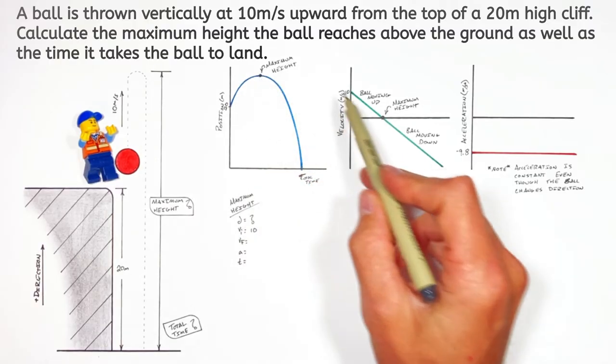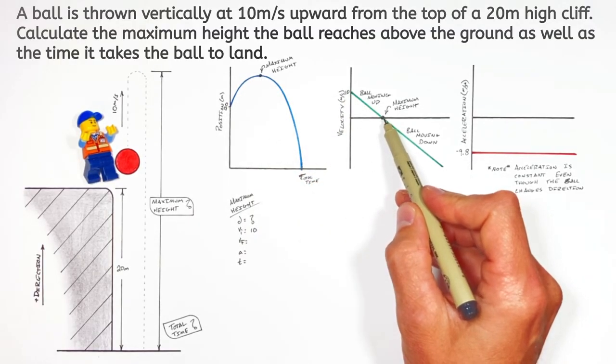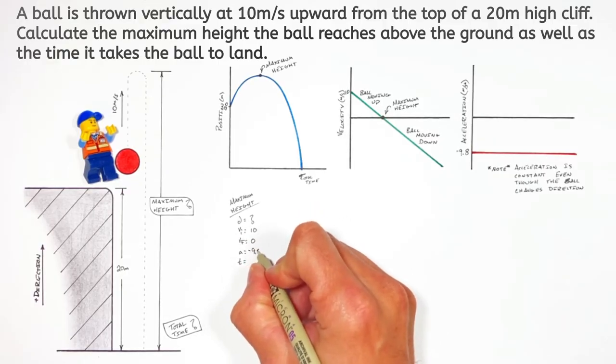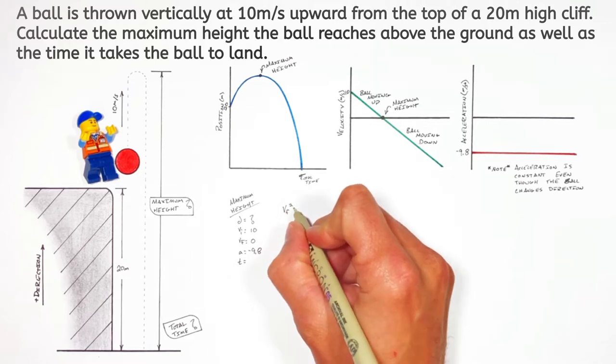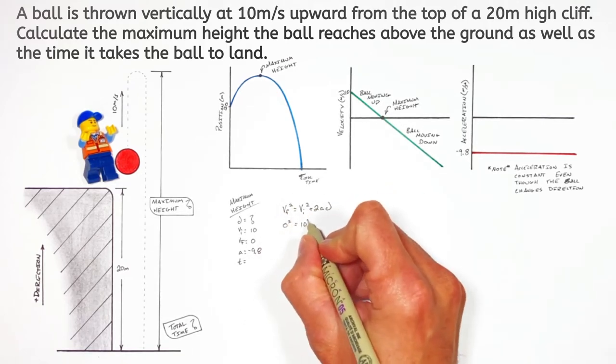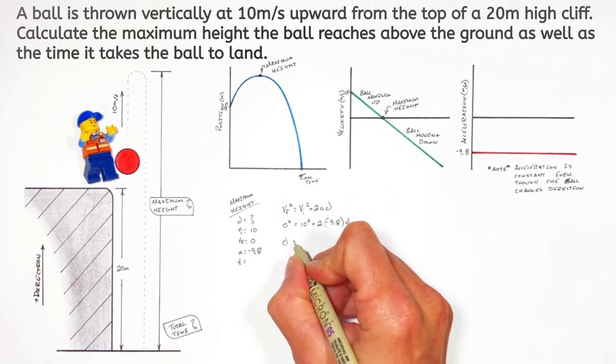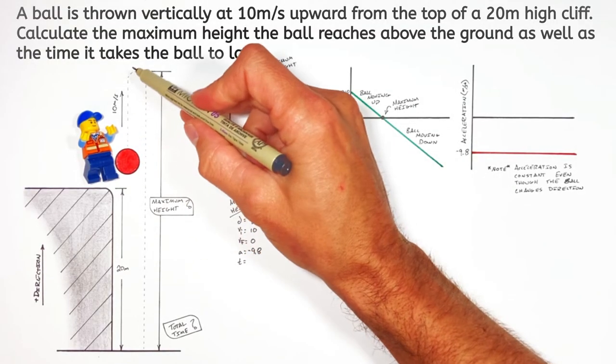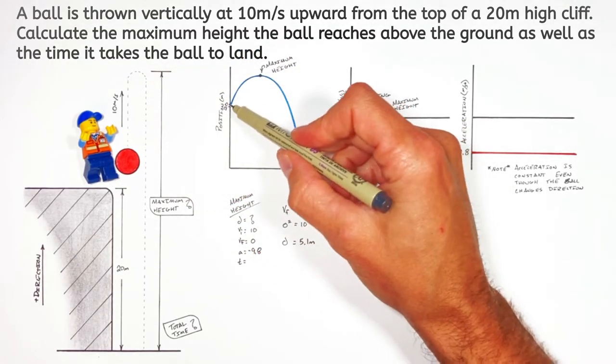And VF, which in this case occurs at the ball's maximum height, is zero. And this is free fall, so acceleration is going to be negative 9.8. So choosing the correct kinematic equation, we can plug in our values and solve for the upward displacement of the ball.